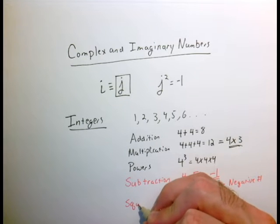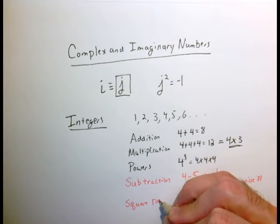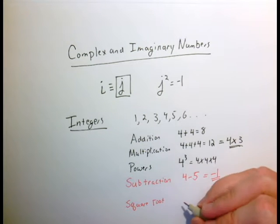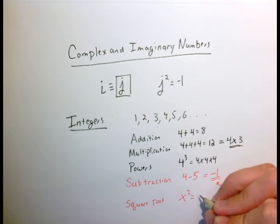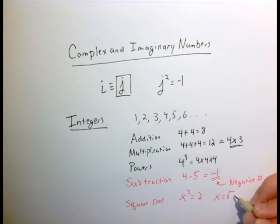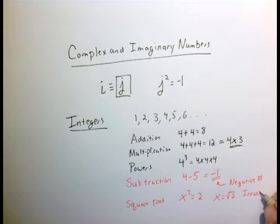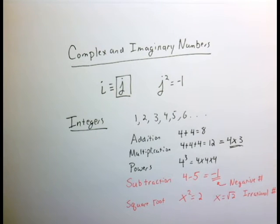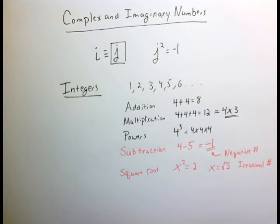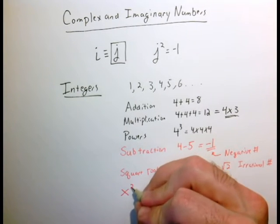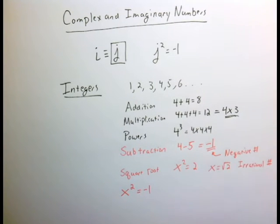Another inverse operation is the square root. You might have seen something like x squared equals 2, and solving for x gives you x equals the square root of 2, which is an irrational number — a strange concept at the time, but it's a number that can't be represented as a fraction. In this same vein, the complex or imaginary number comes about because we get equations like x squared equals minus 1, which led us to define the square root of minus 1.